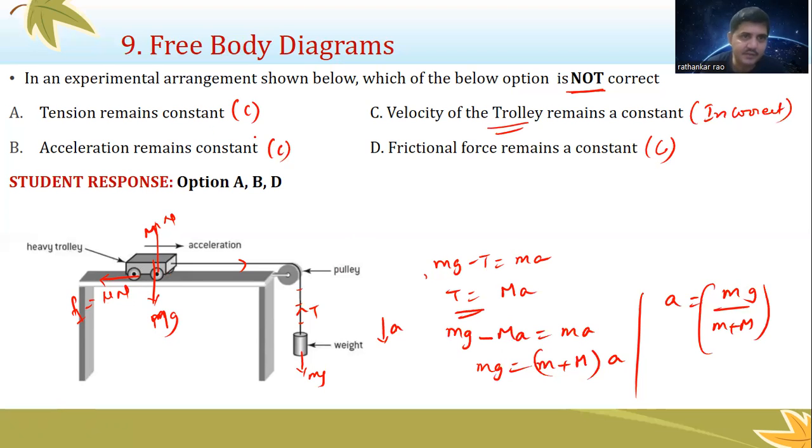So which one is incorrect? This is the incorrect one. So in the experimental arrangement, which of the following option is not correct? C is the right answer. But I have not seen any of the students writing C as the correct answer.